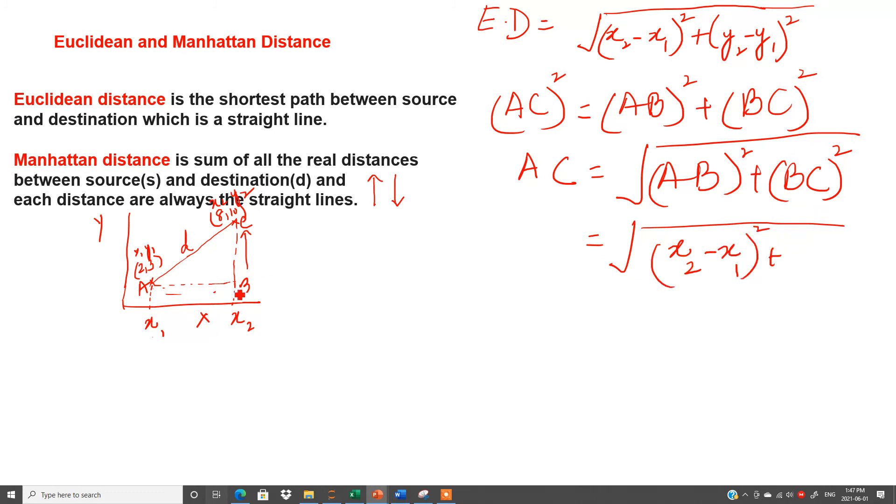Similarly for BC, if I will make the projection on y-axis and from C here, this will be my y1 and y2. So BC, the distance between BC will be y2 minus y1. So instead of BC, I can write down. So this is exactly the Euclidean distance.